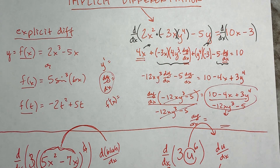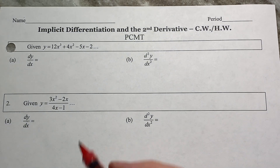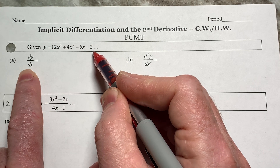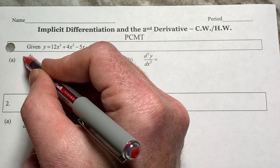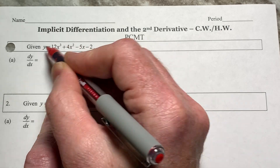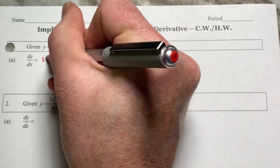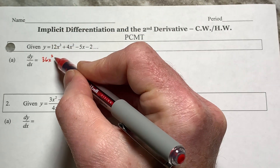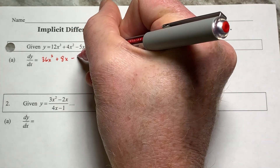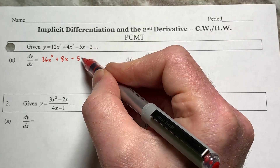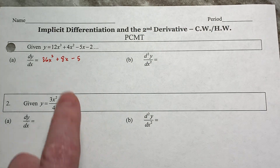We're going to go through these on the classwork on page 101 and 102. Starting pretty basic — here is a function in explicit form. The derivative of Y gives DY/DX. The derivative of 12X cubed is 36X squared, technically times DX/DX which I don't have to write, plus 8X, minus 5, and then minus 0. This hasn't changed at all. The second derivative would be DDX of the first, which gives D squared Y over DX squared, and I end up getting 72X plus 8.